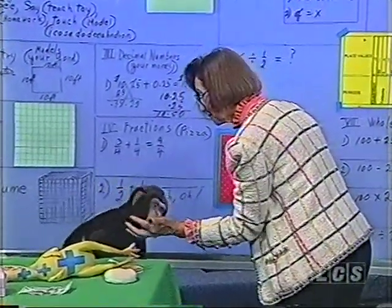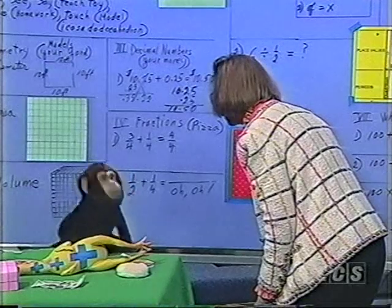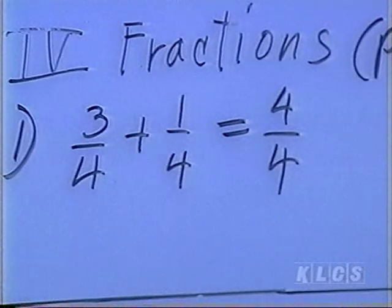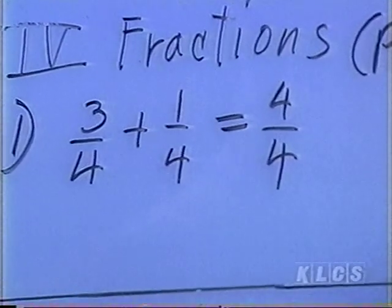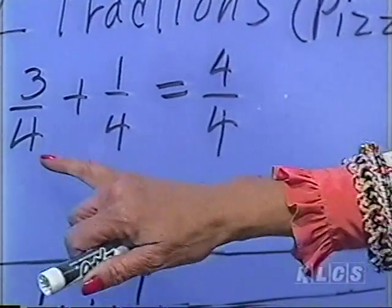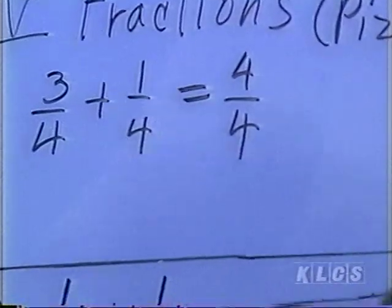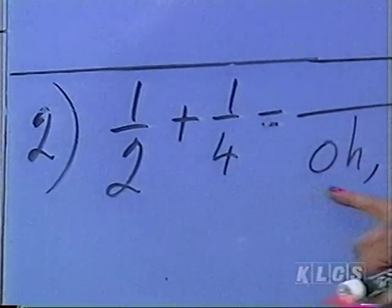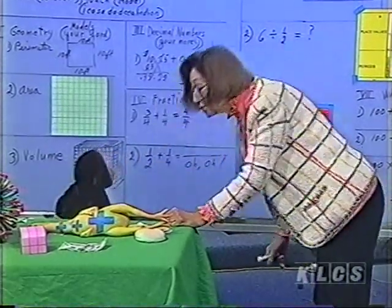We have three-fourths of a piece of pizza and one-fourth of pizza, and all together that gives us four-fourths. So the rule is: we keep the bottom number and add the top numbers. Now look down here — we have half a piece of pizza plus a quarter of a pizza. We have to rename the one-half into two-fourths in order to add them.